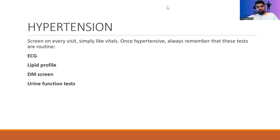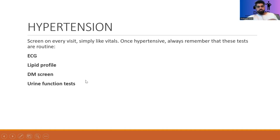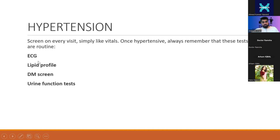Two of those can be remembered easily. Lipid profile and diabetes mellitus screening are common among three disorders: hypertension, dyslipidemia, and diabetes. Whenever you have one of the three, you screen for the other two — I call this the 'similarity formula.' With all three, any one being positive indicates screening for the other two. The other two routine tests — ECG and urine function — are for hypertension specifically: ECG for cardiac effects and urine function for renal involvement.